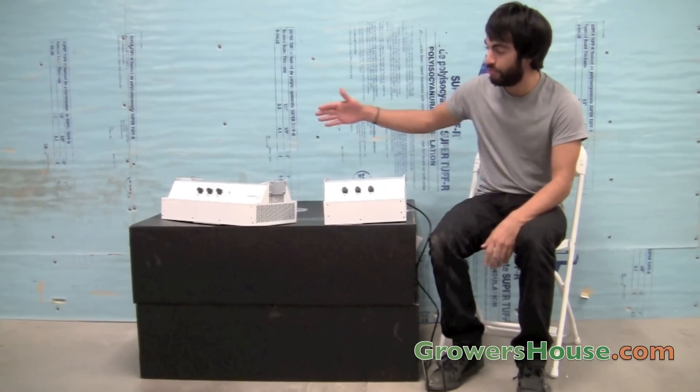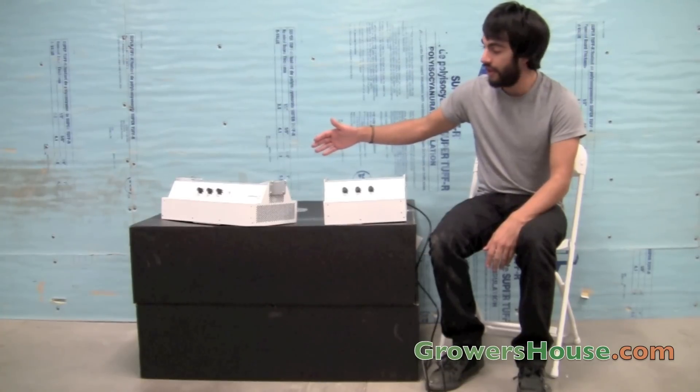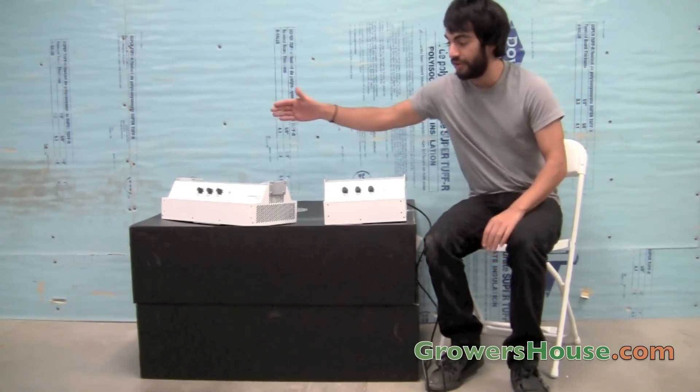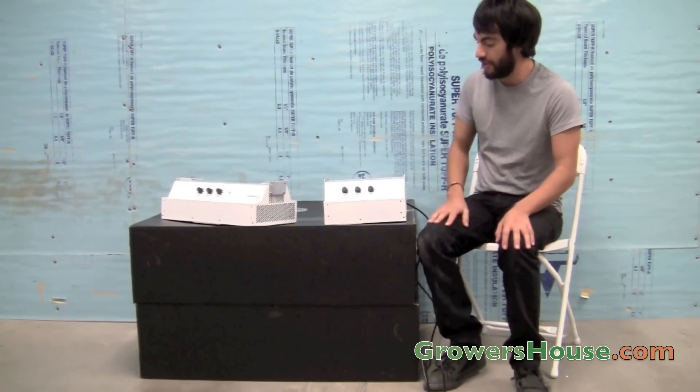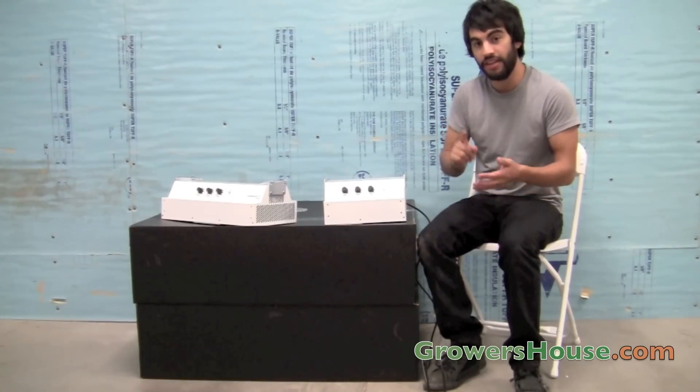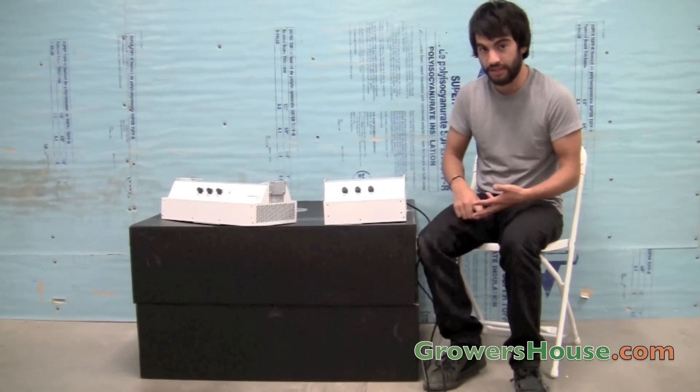These are the new Pro series LED lights from Lumigrow and the two lights they came out with were the 650 and the 325. These units are replacing their old model lineup which was the ES330 and the ES165.